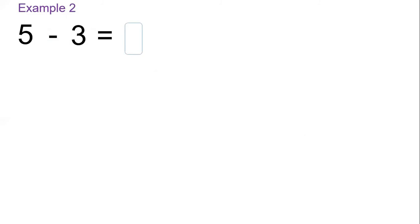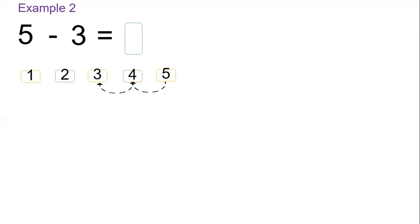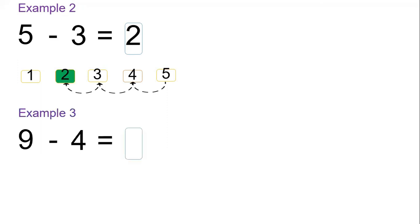Let's have five minus three. We write from one up to five, then go backwards three steps: one, two, three — our answer will be two. Now nine minus four.